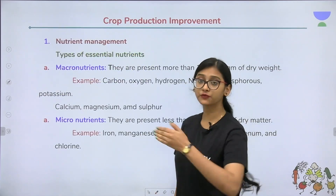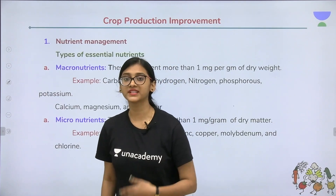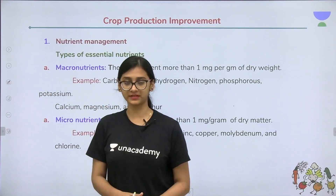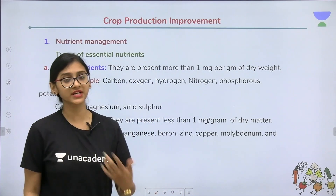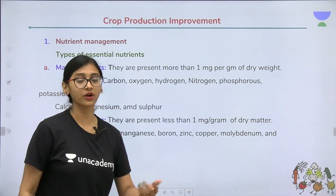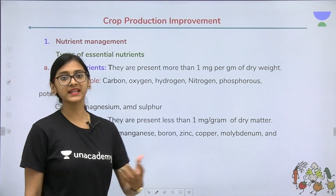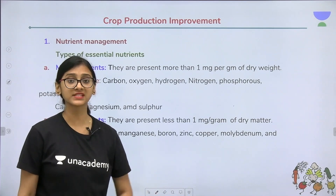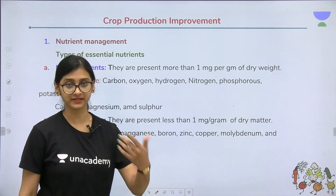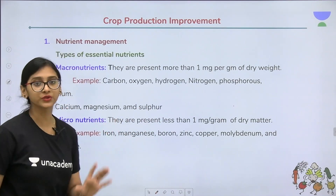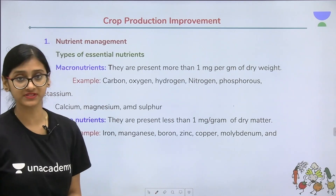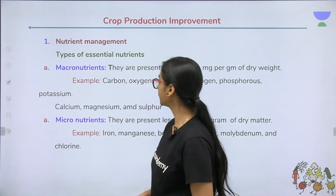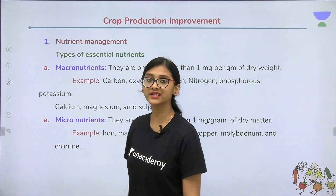There are different ways of improving the production of crops. The very first is nutrient management. In order to increase crop production, we have to introduce enough nutrients for these crops so they can produce a higher amount of products. The essential nutrients can be divided into macronutrients and micronutrients.